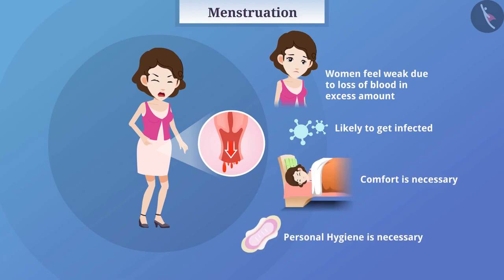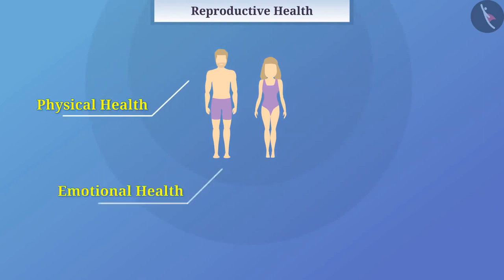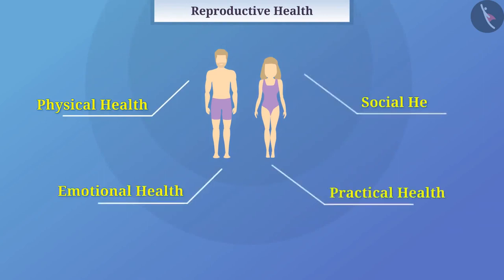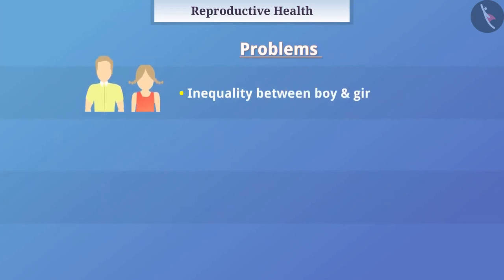Now let's know about reproductive health. Reproductive health refers to all aspects of reproduction such as physical, emotional, practical and social health.